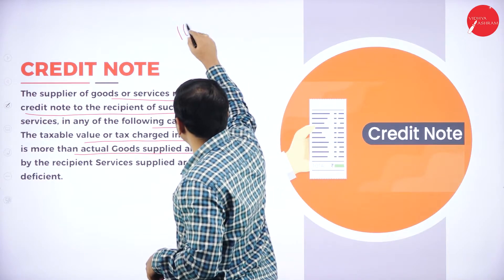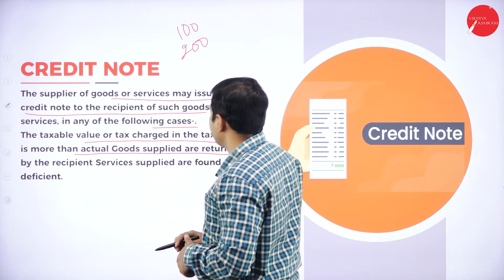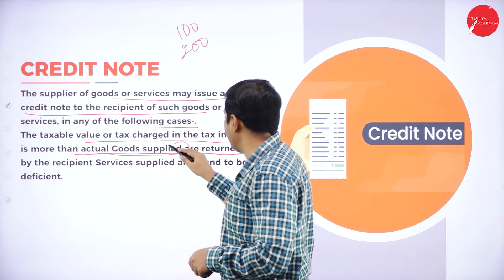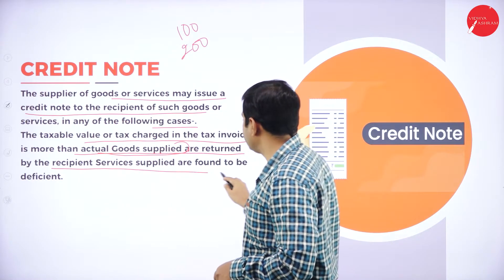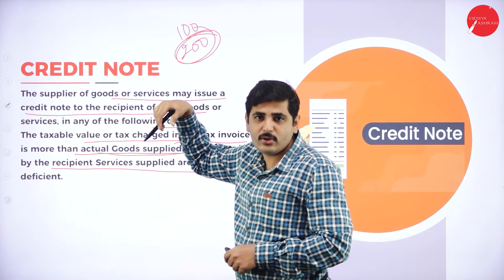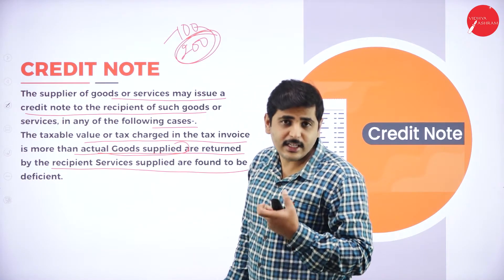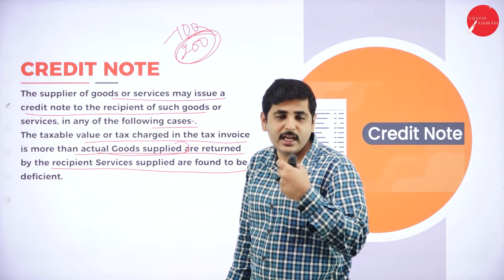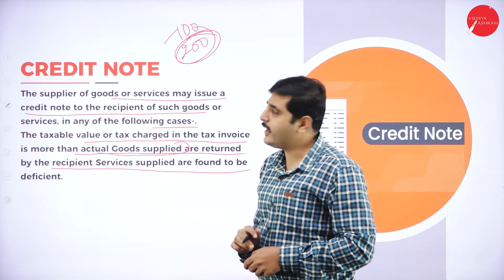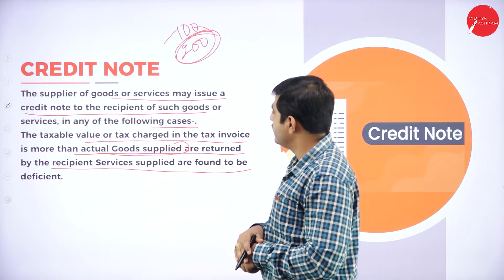The supplier of the goods or service may issue a credit note to a recipient in any of the following cases: when the taxable value or the tax charged in the tax invoice is more than the actual goods supplied or returned by the recipient, or the service supplied is found to be deficient. In such a case, the recipient of the goods will issue a credit note where he will claim the remaining tax — because instead of paying 100 rupees he has paid 200 rupees — to claim back the excess tax paid, so he will issue a credit note to the supplier.